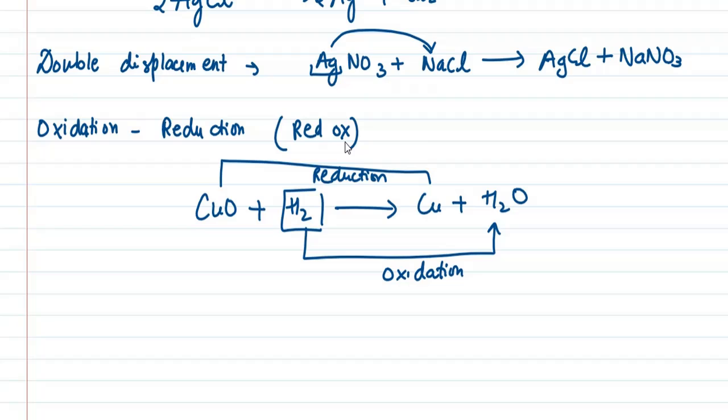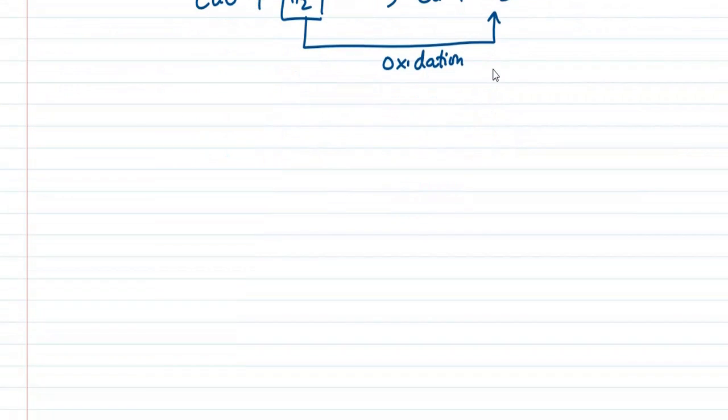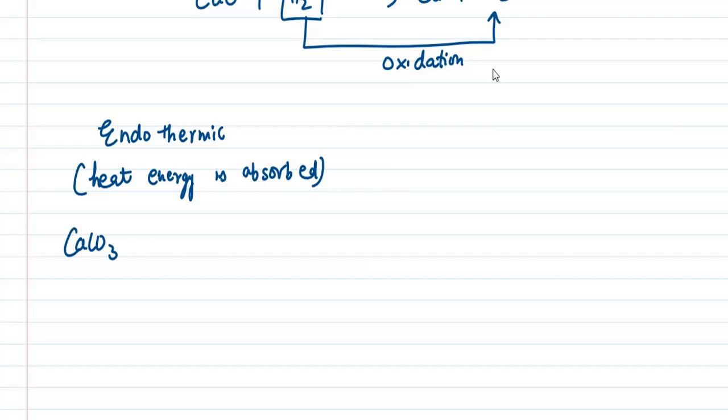In endothermic reaction, heat energy is absorbed. Heat energy needs to be absorbed. One example is CaCO3 when heated gives calcium oxide and carbon dioxide. This is the endothermic reaction because heat energy is involved.